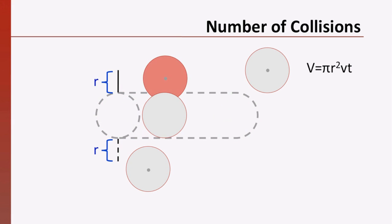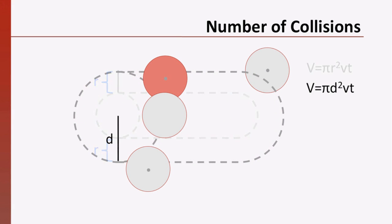So, to find the number of collisions, we need to look at the volume, pi d squared times vt, and multiply this by the density of gas molecules, n sub v. We're not quite done.